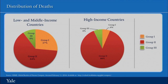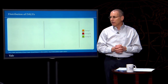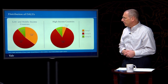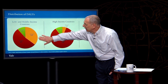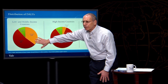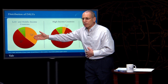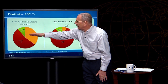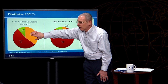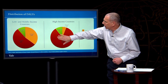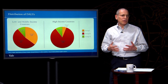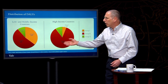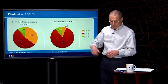When we look at DALYs rather than deaths, it's a little different. In low- and middle-income countries, communicable diseases are associated with a fair amount of disability, so Group One causes a larger share of total DALYs than of total deaths. For high-income countries, injuries — which cause disability when people survive them — represent a larger share of DALYs than of deaths, while non-communicable disease goes down slightly.